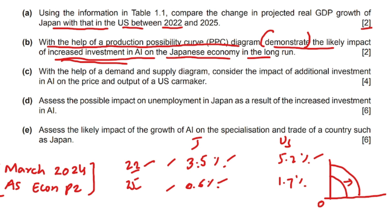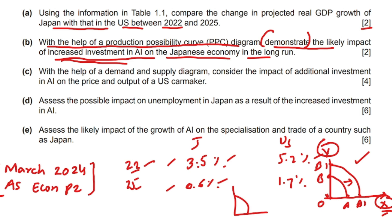Label the graph perfectly: the x-axis shows Good X and the y-axis shows Good Y. The PPC was initially AB, and after the increase in investment in AI, the production possibility frontier shifts from AB to A1B1. You must label every point on the diagram. What students often do is draw the graph without labelling — that is not correct. When the examiner says 'demonstrate with a graph,' just draw it; when they say 'explain with a graph,' draw it and give an explanation.